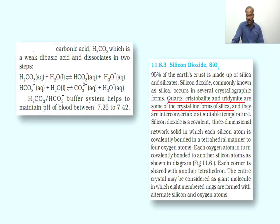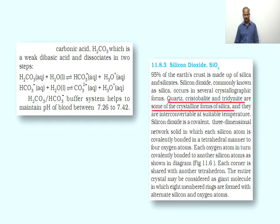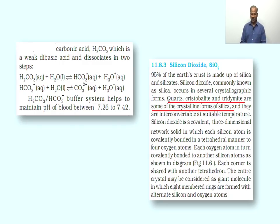Silicon dioxide is a covalently bonded compound — a three-dimensional network solid in which each silicon atom is covalently bonded in a tetrahedral manner to four oxygen atoms. Each oxygen atom in turn is covalently bonded to another silicon atom. The structural formula of silicon dioxide is an important concept.